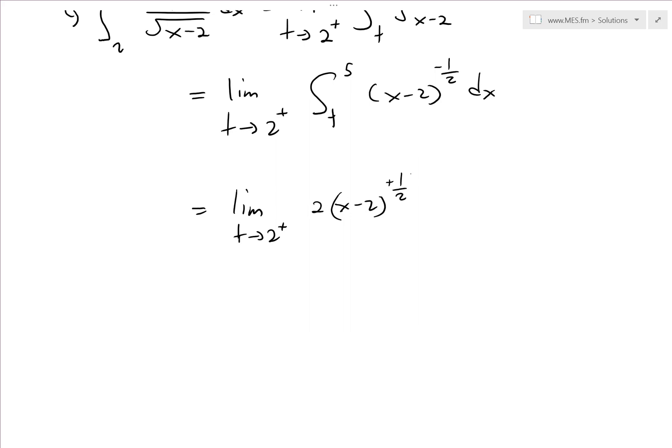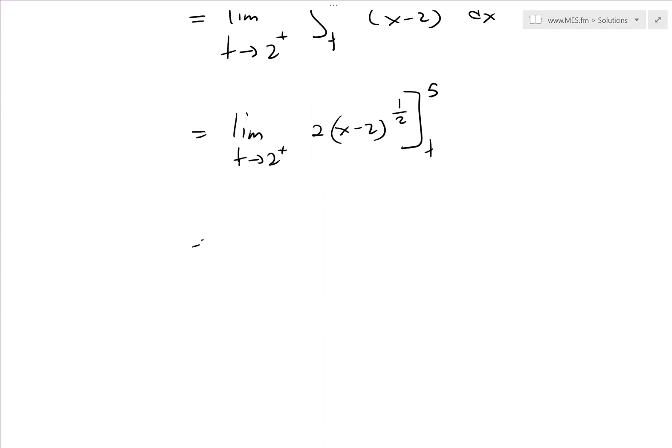Dividing by 1 over 2 is the same as multiplying by 2, so that's the integral. Now we evaluate it from t to 5.